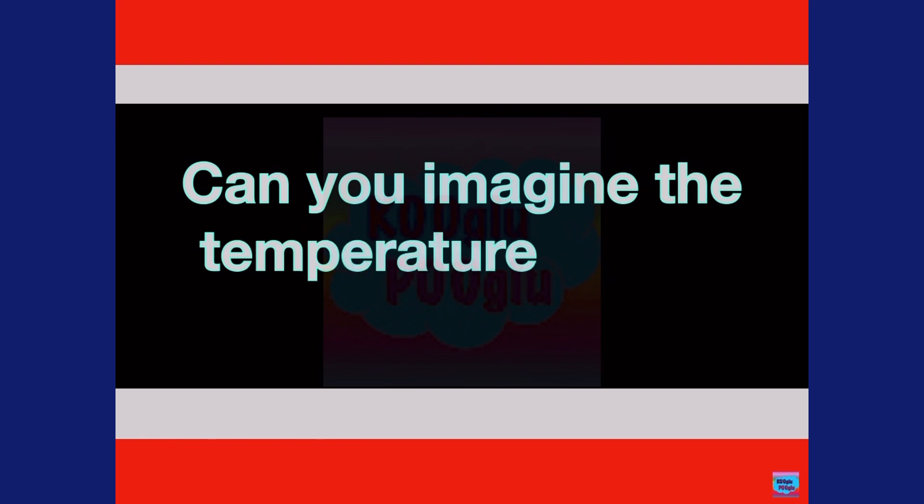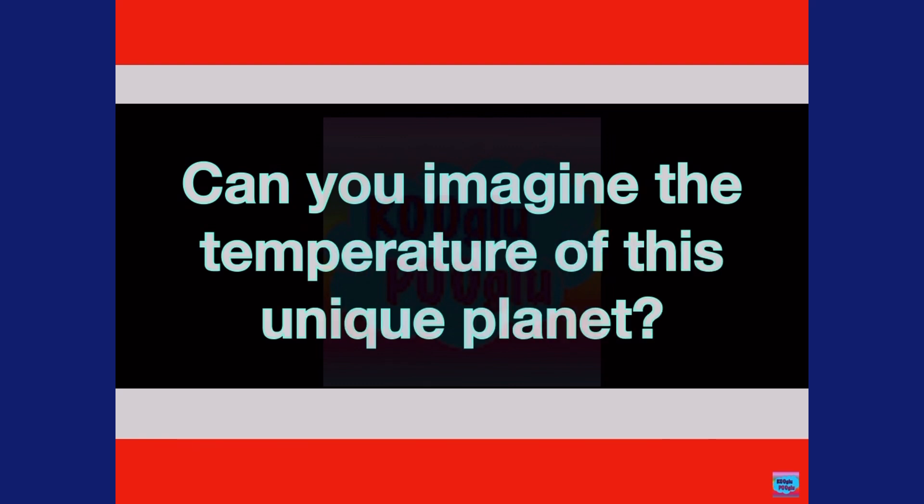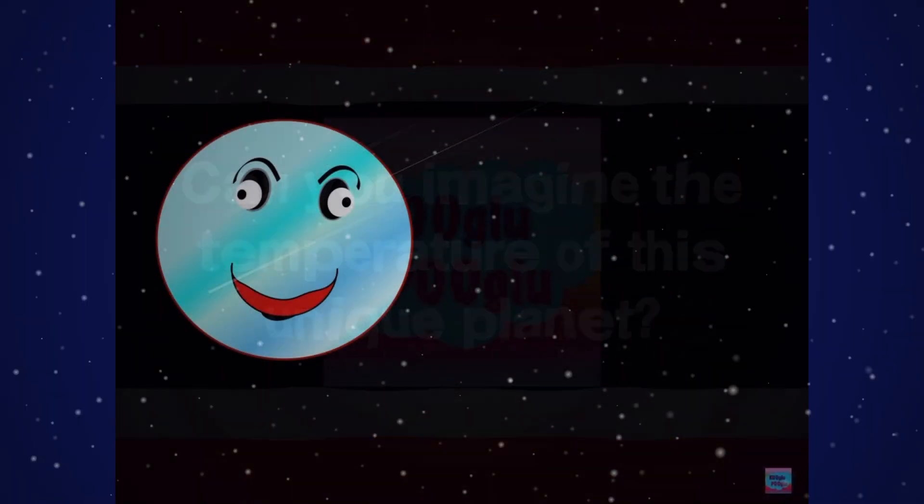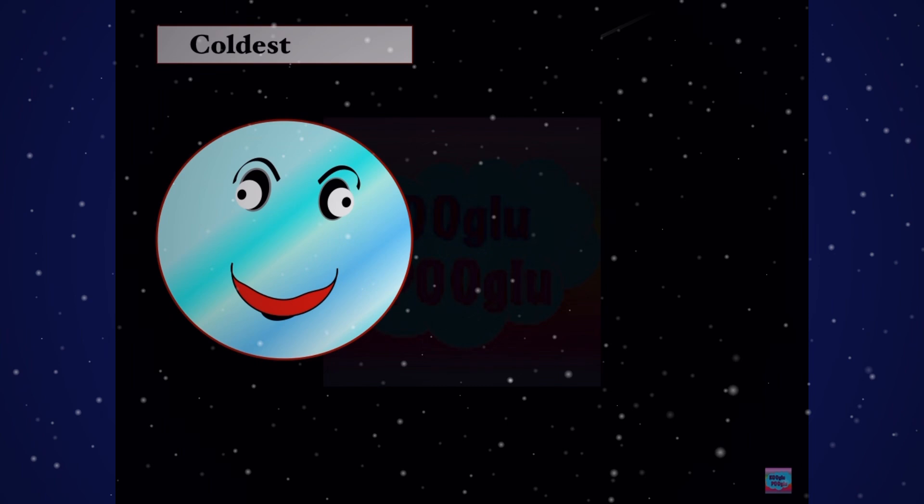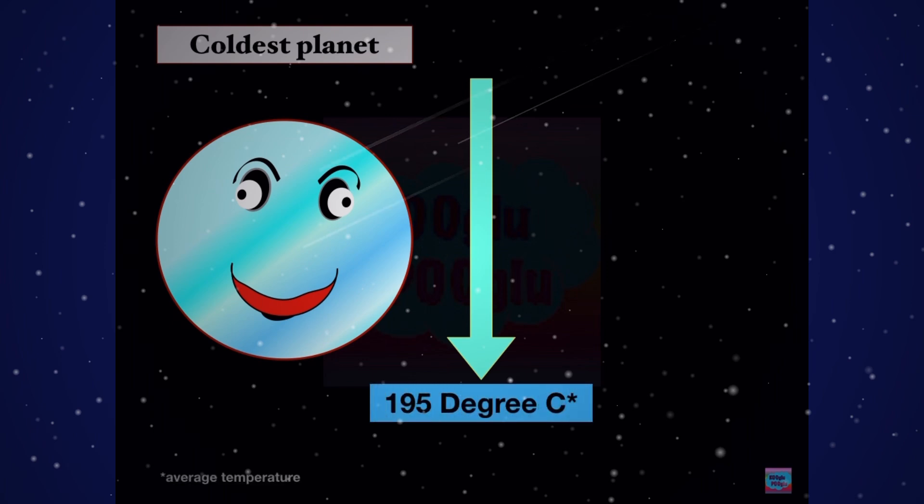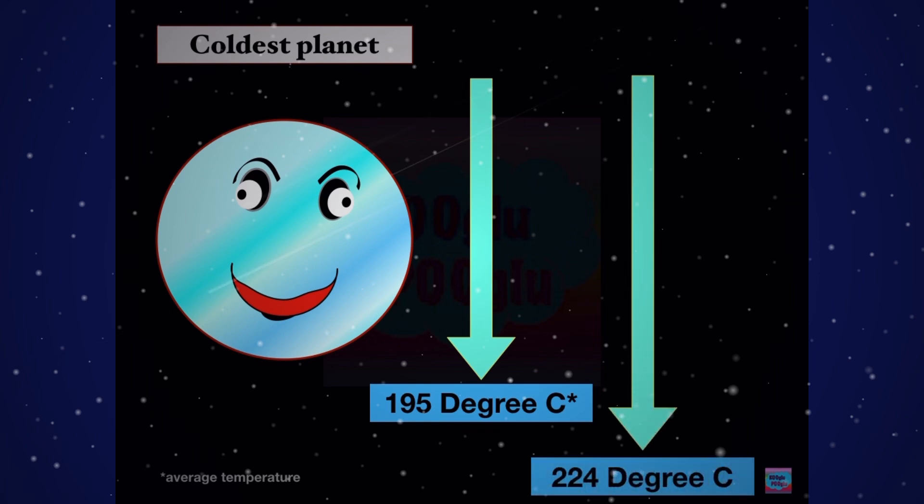Can you imagine the temperature of this unique planet? It has the coldest temperature because it's the coldest planet. The average temperature on Uranus is negative 195 degrees Celsius, while the lowest recorded temperature is negative 224 degrees Celsius.